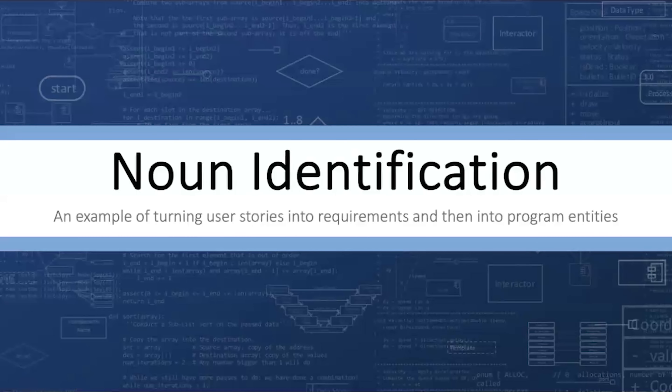Today's video will give an example of how to use the noun identification process. I'm James Helfrich. The noun identification process is the process of starting with a user story, then going to requirements, and finally getting all the way down to program entities. This can be a little bit difficult at first, so we'll show an example with a semi-real world example.